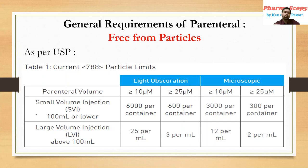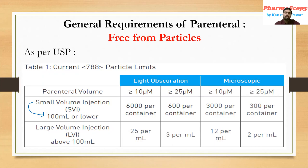For small volume injection (SVI), which has a volume less than or equal to 100 mL, using the light obstruction technique: for particles ≥10 micrometers, the limit is less than 6,000 particles per container; for particles ≥25 micrometers, the limit is 600 per container.